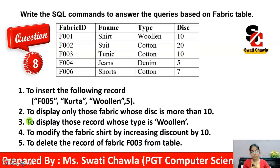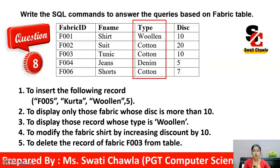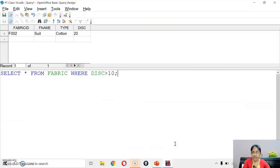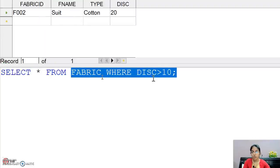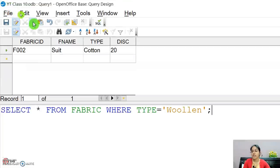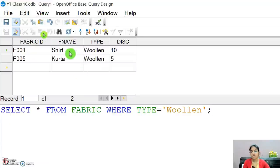The next part: display those records whose type is 'boolean'. Write: SELECT * FROM fabric WHERE type = 'boolean'. The type value should be written within quotes. Execute the query — as you can see, the record whose type is 'boolean' is displayed.